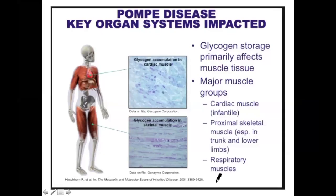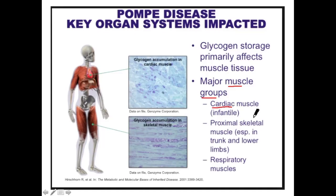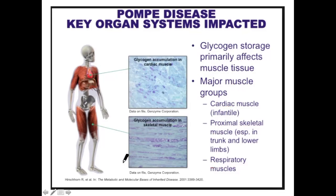Key organs involved in Pompe disease: the cardiac muscle is primarily affected (infantile Pompe progresses to heart failure), proximal skeletal muscles are involved causing weakness of the trunk and lower extremities, and respiratory muscles are affected leading to respiratory failure.